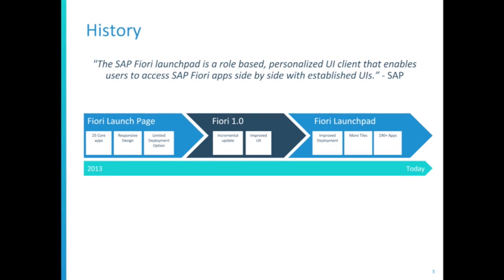Shortly after this we moved on to Fiori 1.0, which was an incremental update on the launch page that continued the UI theme of tiles and responsive design, and improved the number of applications generally. Then not long after that, in November 2013, the Fiori launchpad was released, which brought with it quite a significant update — a similar UI but a much more polished-looking thing, with refinements to all of that. Most importantly, it increased the number of standard applications from 25 to just under 200.